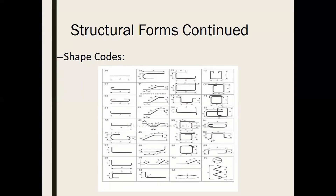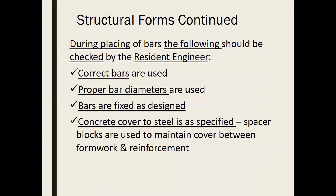The engineer would specify, for example, the bottom bar on shape 33, top bar on shape 20, and the two sides on shape 42. During placing of bars, the resident engineer must check that the correct bars are being used, the proper bar diameter is as specified, and the bars are fixed as designed. Concrete cover to steel is also specified.